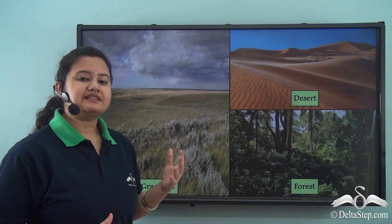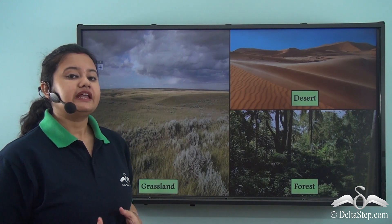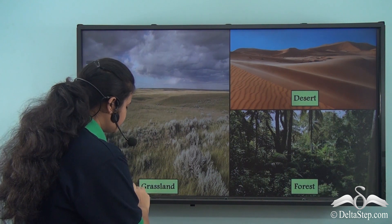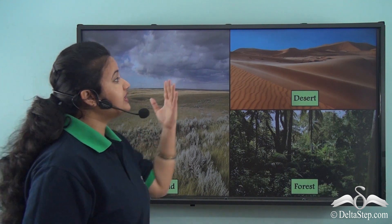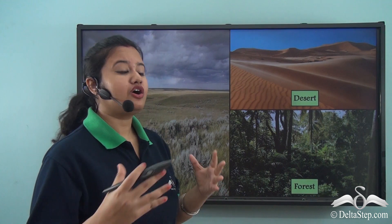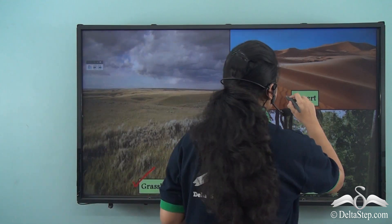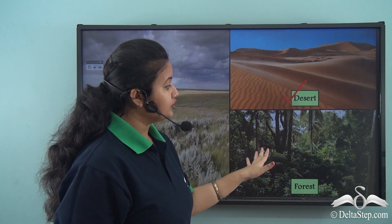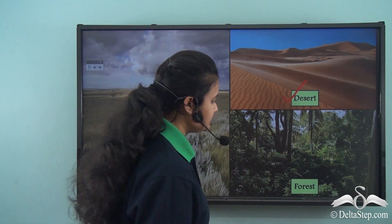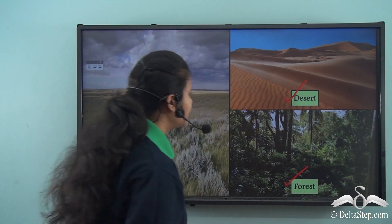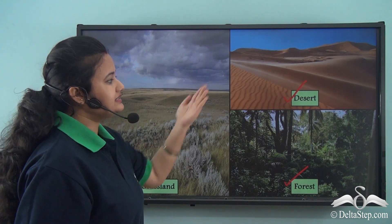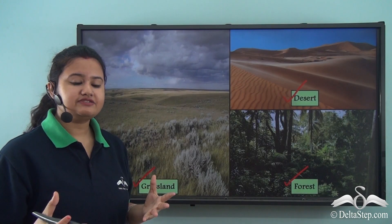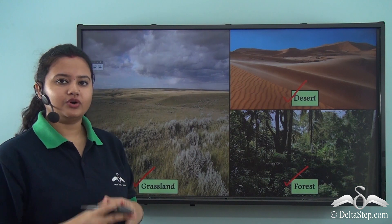Plains can be covered with grasses, as in the case of grasslands. They can be completely dry and lack vegetation, as in the case of deserts. And they can even be covered with tall dense trees, as in the case of forests. So plains can be a grassland, desert, or forest. Now we should identify some of the major plains of the world.